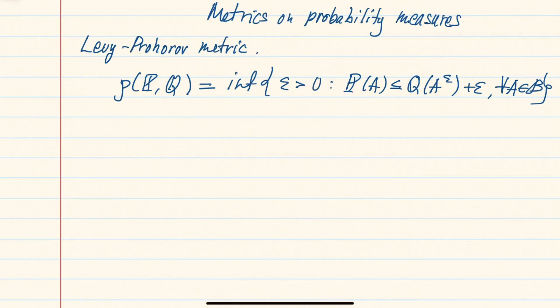It allows you to compare the probabilities on a given Borel set, but you give yourself an epsilon room to expand the set and also an epsilon room in the comparison of the probabilities themselves.